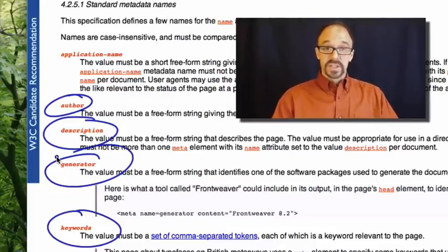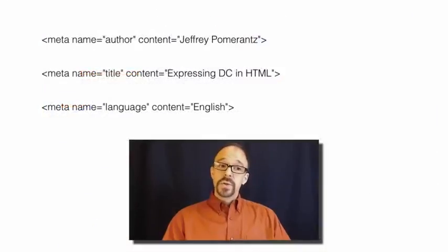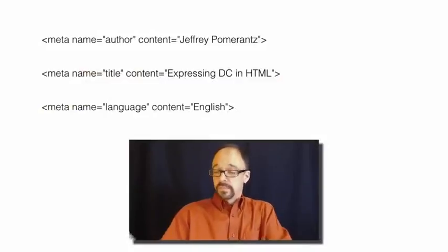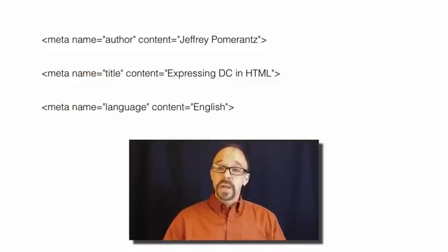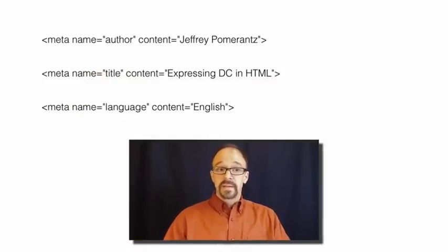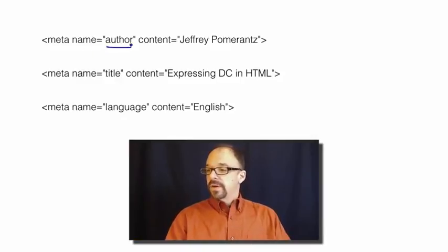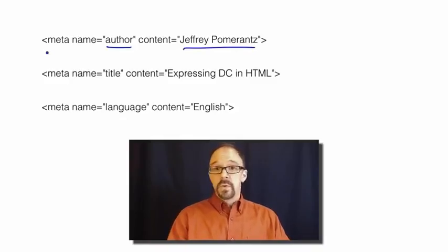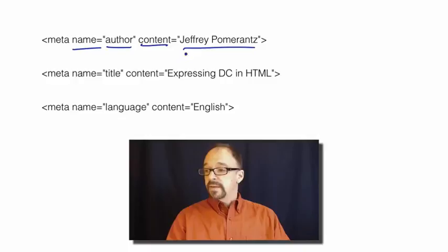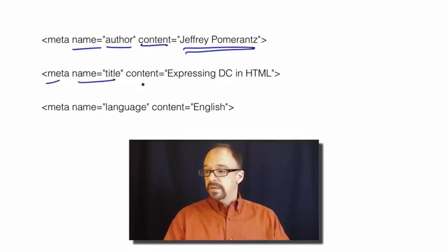If I wanted to create an HTML page out of, for example, these slides here that you're looking at, they might have these meta tags. The element is author, the value is Jeffrey Pomerantz. So that gets translated to meta, name, element name, content, and then the value for that element. Meta, element, value.